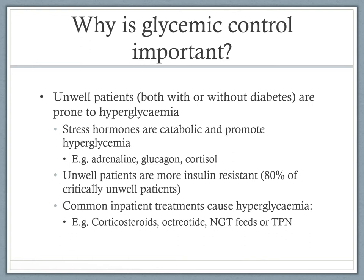Why is glycemic control important? In the inpatient setting, unwell patients — both those with or without diabetes — are more prone to hyperglycemia. That's partly because stress hormones are catabolic; for example, adrenaline, glucagon, and cortisol will promote hyperglycemia. Unwell patients are also more likely to be insulin resistant — around 80% of critically unwell patients will be more insulin resistant. So not only are there factors promoting hyperglycemia, but they're also less likely to respond to insulin.